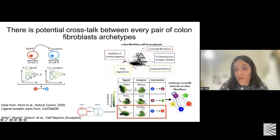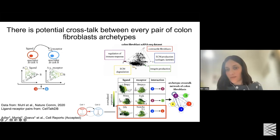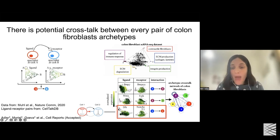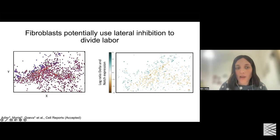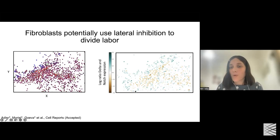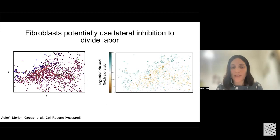To test whether the Delta-producing and Notch-producing cells are indeed close to each other — since this is a contact-dependent interaction — we mapped the expression of Delta and Notch back to the slide-seq data. Here the cells are colored based on their specialization archetypes, and also colored based on the ratio between Delta and Notch expression. You can see that the Delta and Notch-expressing cells form a boundary in tissue space and are found in proximity to each other, validating our prediction.